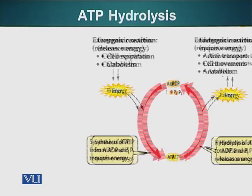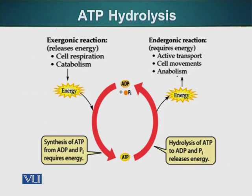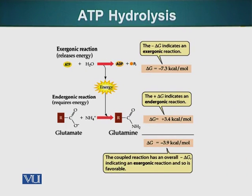For example, processes that require energy are endothermic reactions — such as building up protein molecules from amino acids. In order to compensate the energy they require, ATP can be used. We can break the ATP molecule, release the energy, and use that energy to complete the processes that require energy. So this is a cycle in the cell — processes that require energy get the energy from processes that release energy. An example of an exothermic reaction is the hydrolysis of ATP.